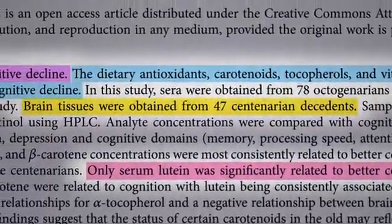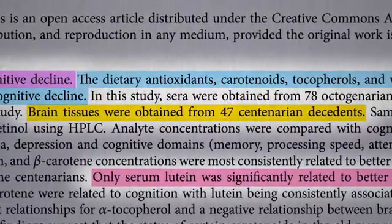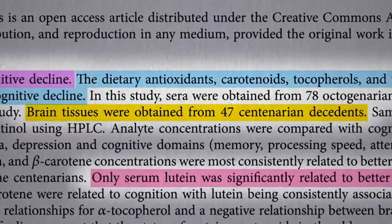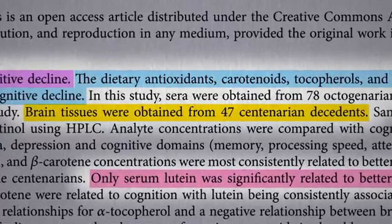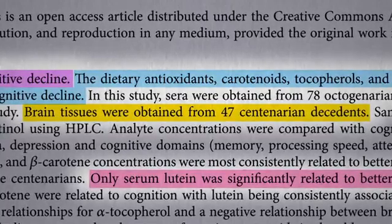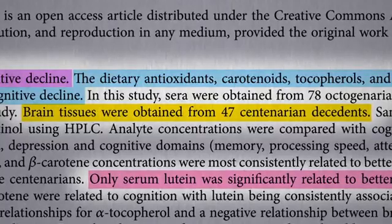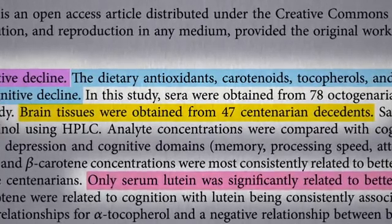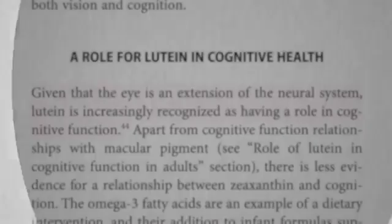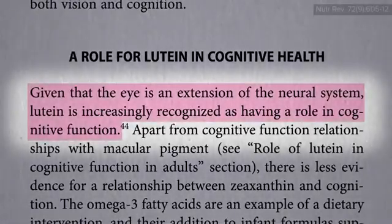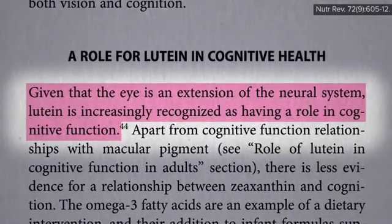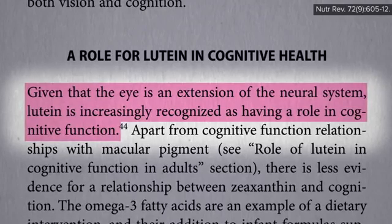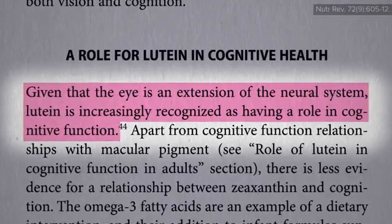In that study they looked at brain tissue on autopsy — by then it's a little too late. So how could you study the effects of diet on the brain while you're still alive? If only there was a way we could physically look into the living brain with our own two eyes. There is — with our own two eyes — the retina. The back of our eyeball is actually an extension of our central nervous system, an outpouching of the brain during development.